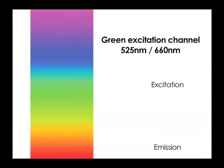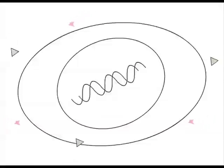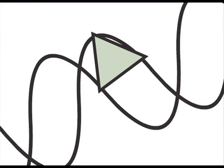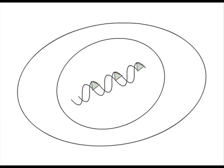Channel 2 of the Cellometer has green excitation to detect red emission. Live cells exclude EB. Without its DNA binding, there is no detectable red light from live cells.